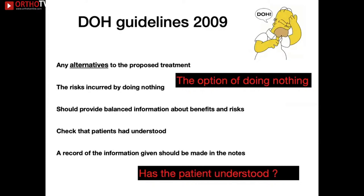The Department of Health also outlined these principles: discuss the option of doing nothing, the risks of doing nothing, and provide balanced information about benefits and risks. Often, if we are leaning towards surgery we might underplay risks; if towards conservative treatment, we might overplay them. What we need to do is give balanced risk information and confirm the patient really understood it, with appropriate documentation.